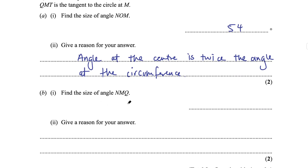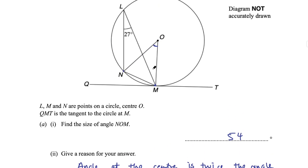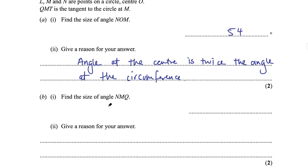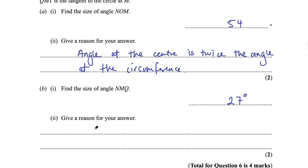Part B1 asks for angle NMQ. This uses the alternate segment theorem — probably one of the most difficult circle theorems. With a tangent and a triangle joined at M, the angle between the triangle and the tangent equals the opposite angle in the triangle. So angle NMQ = 27 degrees. Reason: alternate segment theorem. That's question 6 for 4 marks.